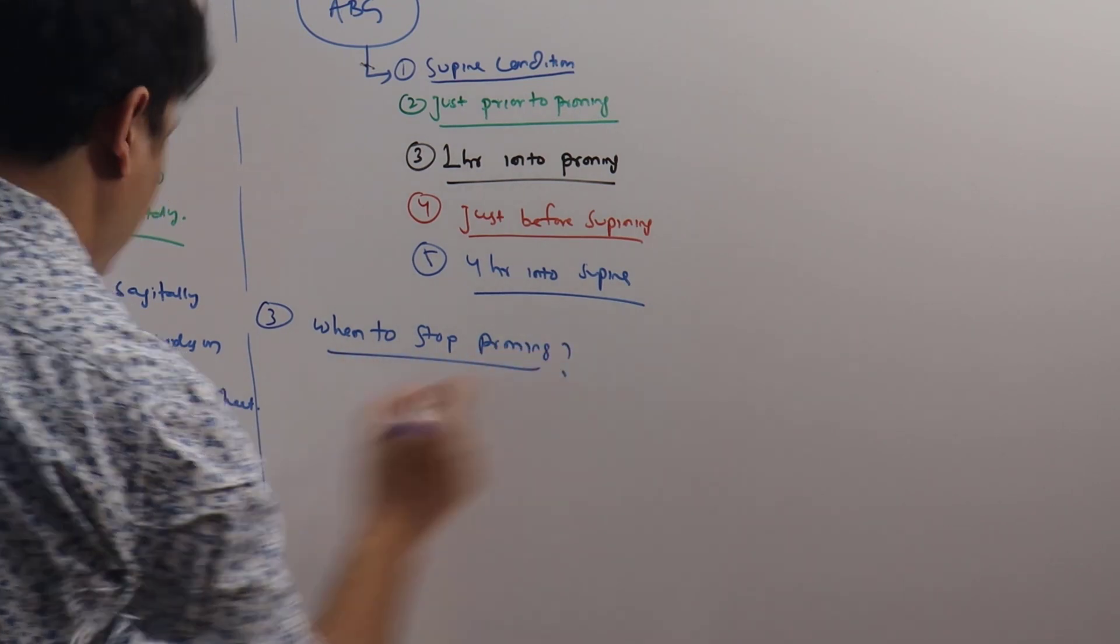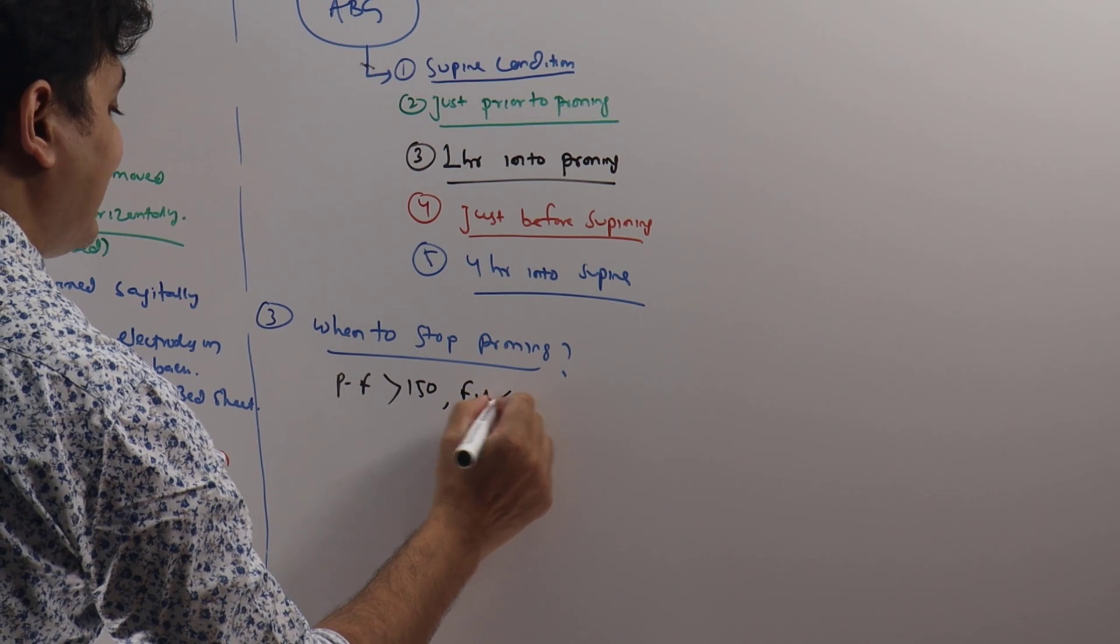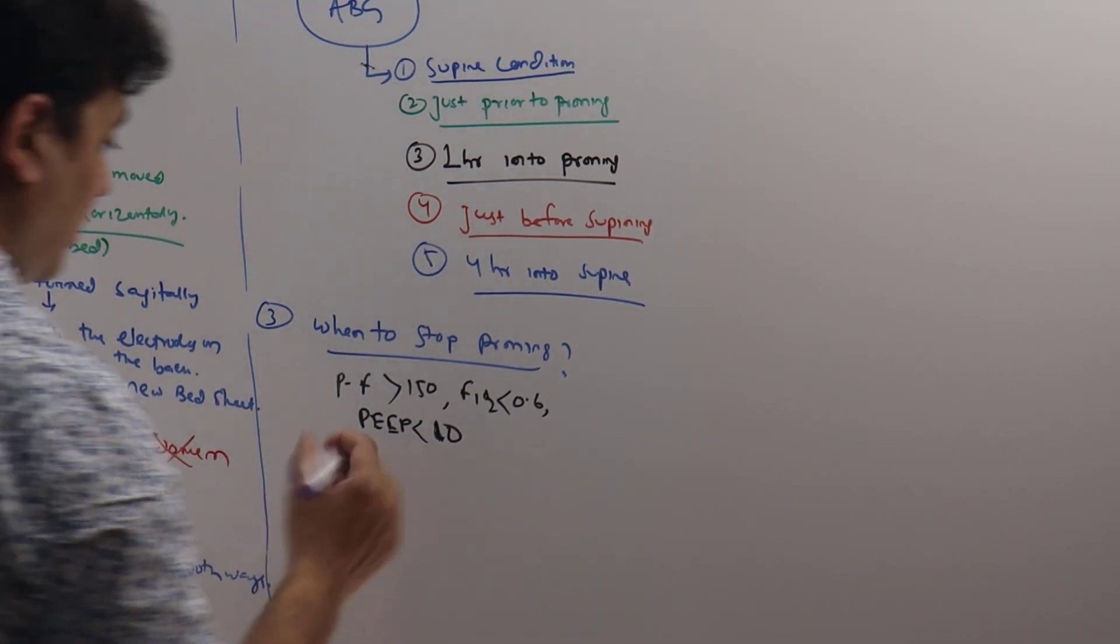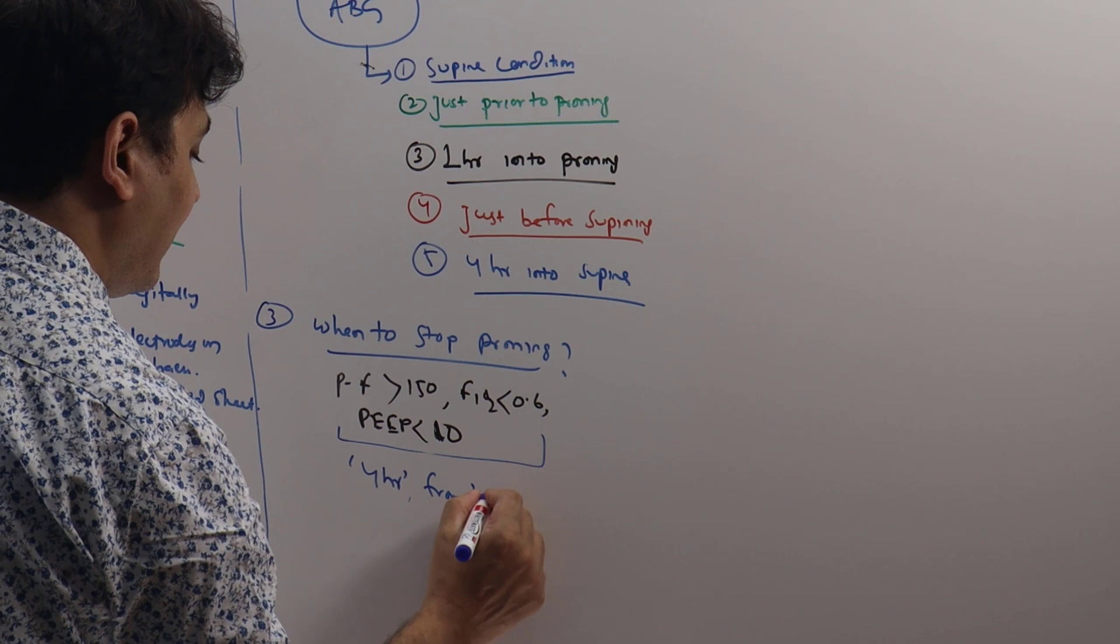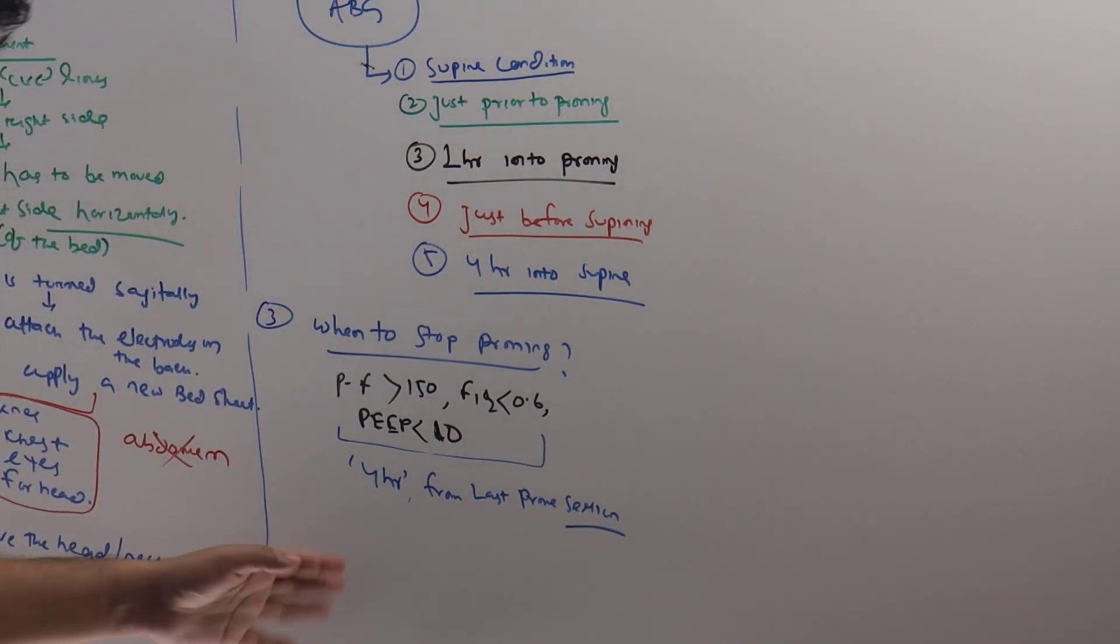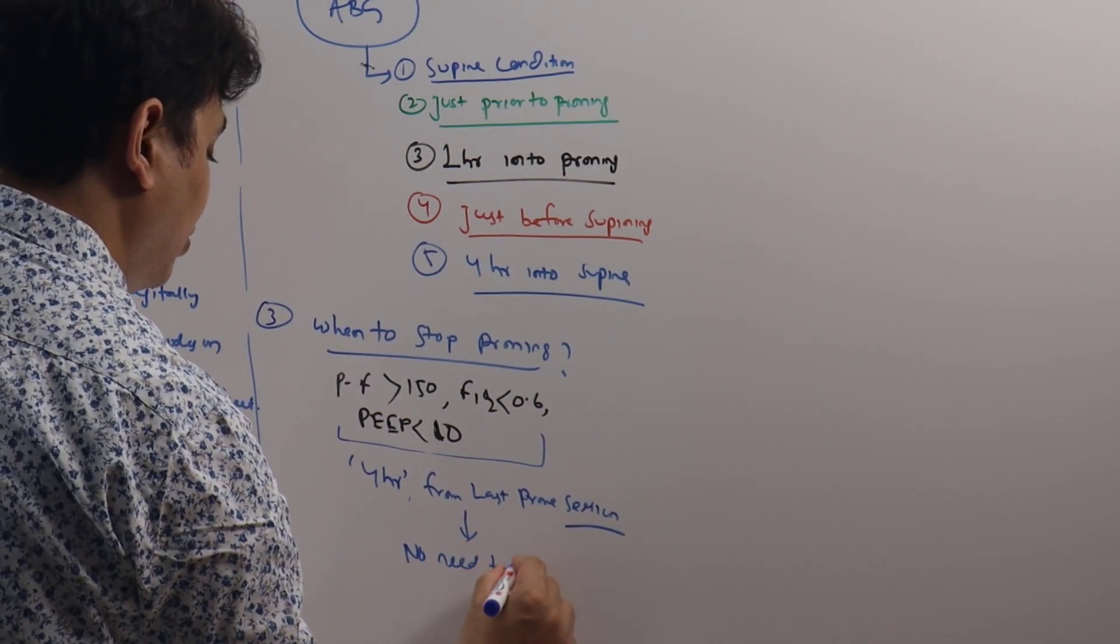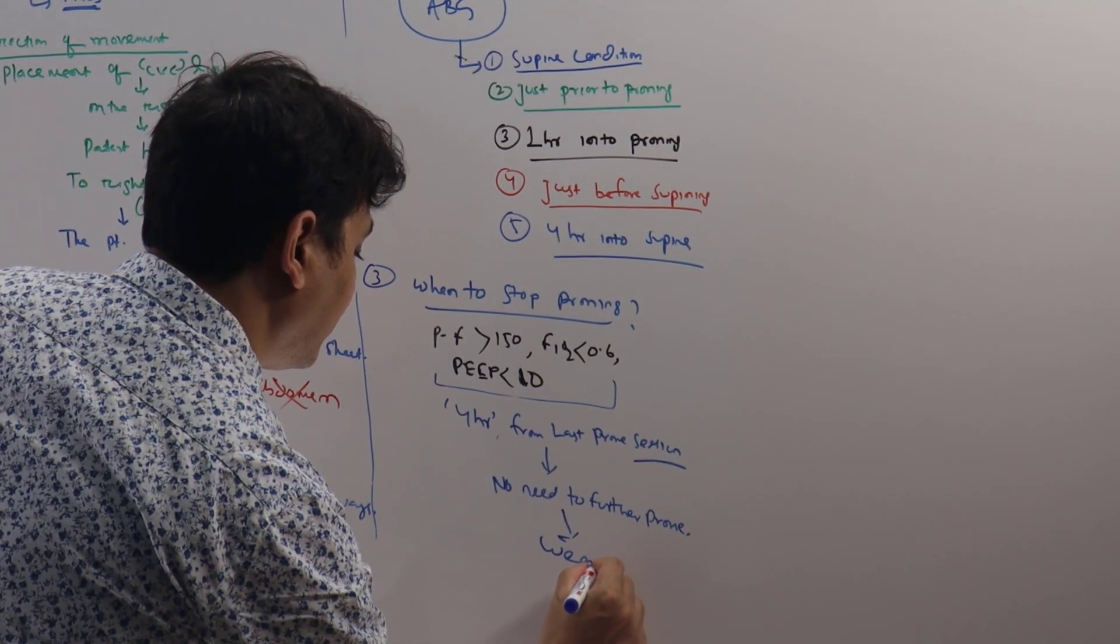Number three: when to stop proning? When everything is going good. That means when the patient's PF ratio is more than 150, FiO2 is less than 0.6, PEEP is less than 10, and it is sustained for four hours when patient is going good in supine from last prone session. So we have proned the patient, now patient is supine and the PF ratio is like this, and it is sustained for four hours in the supine position. At this time there is no need to further prone the patient. Now you can think about weaning.